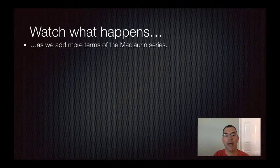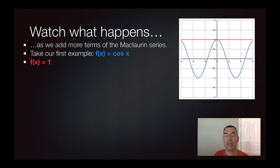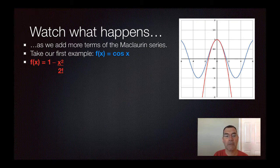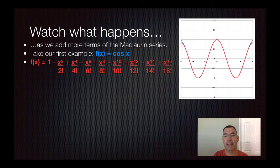Watch what happens when we add more terms to the Maclaurin series. If it goes to infinity, it matches the function exactly, but if you stop anywhere along the way, it only approximates the function. Looking at f(x) equals cosine x — with just the first term, f(x) equals one, which doesn't look remotely like the cosine function. Adding the next term introduces some curviness to the graph, making it look a bit more like cosine. As more terms are added, the polynomial graph looks more and more like the cosine function. By x to the 16th power, it looks very much like cosine, and continuing would make it look even closer.